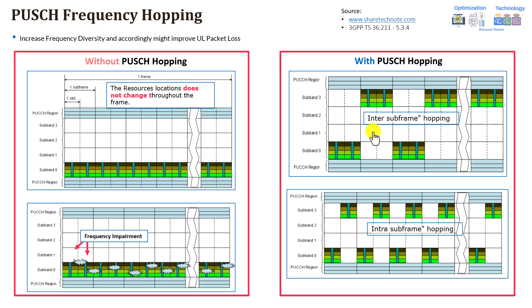There are two types of hopping: inter-sub-frame, where the frequency allocation changes at each sub-frame, and intra-sub-frame, where within the same sub-frame the first slot is allocated in one location and the second slot is allocated in a different resource block. The main idea is that this increases frequency diversity and can reduce packet loss. However, this cannot completely mitigate interference issues, because unlike frequency selective scheduling, it does not guarantee a clean resource block will always be selected.